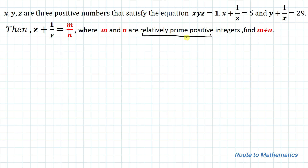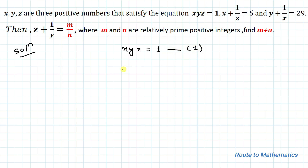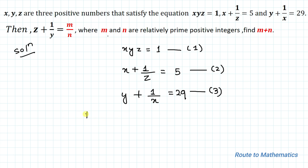Relatively prime positive integers means m and n have no common divisor except 1 — they are co-prime. Our first step must be finding the value of x, y, z so that we can find the value of m/n. We have three equations: equation 1 is xyz = 1, equation 2 is x + 1/z = 5, and equation 3 is y + 1/x = 29.